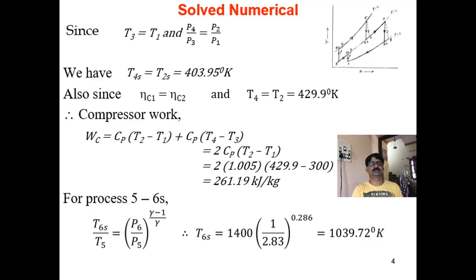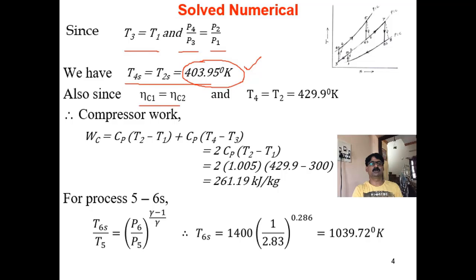Since T3 equals T1 by perfect intercooling, and P4/P3 equals P2/P1 (equal stage pressure ratios), T4s becomes equal to T2s — no need to recalculate. Similarly, since ηC1 equals ηC2, T4 also equals T2. You can verify using T4s/T3 = (P4/P3)^((γ-1)/γ) and applying the second stage compressor efficiency.